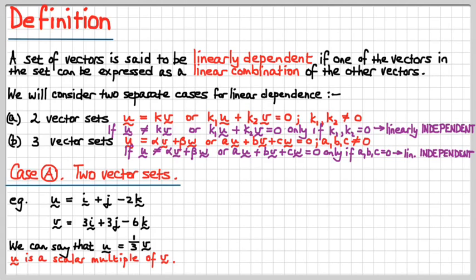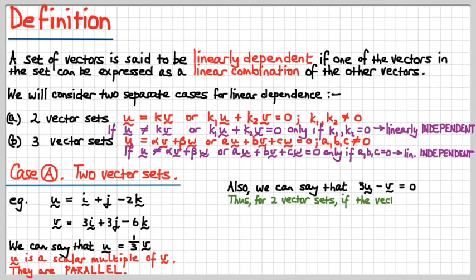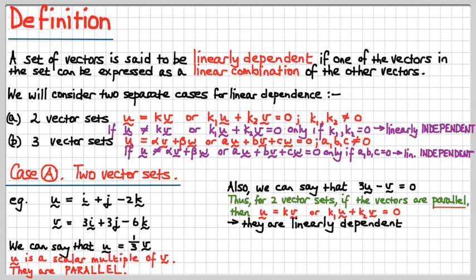This applies in this situation where k is a third. Now you're beginning to see it, aren't you? Yeah, u is a scalar multiple of v, yes, and they are parallel. We can also say that if we reorganize this expression, we could say that 3u minus v equals 0, which is this kind of expression up here, where k1 is 3 and k2 would be minus 1. Thus for two-vector sets, if the vectors are parallel, then those equations apply and they are linearly dependent. It's pretty easy, isn't it?